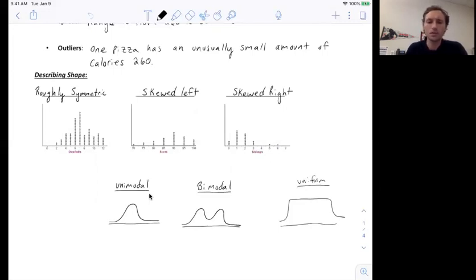The second thing about shape is unimodal means there's one peak. Bimodal means there are two peaks. Multimodal means there's three or more peaks. And then uniform, it is flat across the top, or relatively flat across the top.